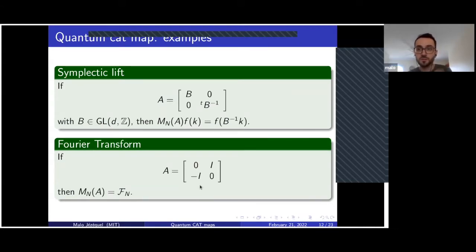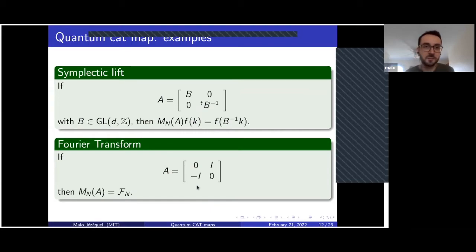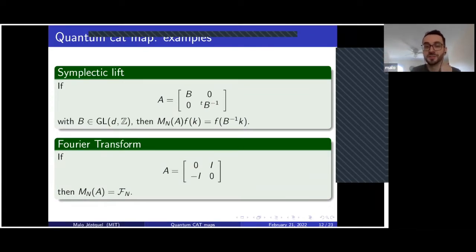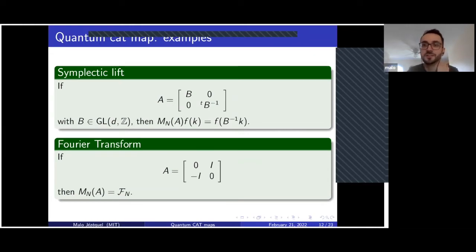So there are several ways to define the quantum cat map — by representation theory, by an explicit Fourier integral operator formula. Let me give a few examples. The first is what I call a symplectic shear. If you have a matrix that preserves the position-momentum decomposition, the quantum cat map will just be a pre-composition by the inverse of the matrix that acts on position. If you have something that interchanges frequency and position with a flip of sign — because you need to be symplectic — you have the Fourier transform.